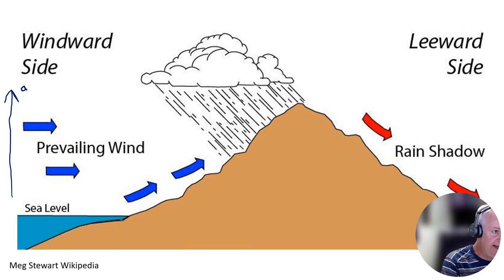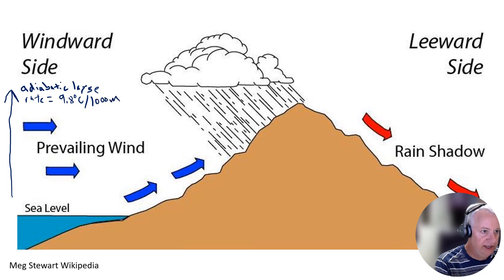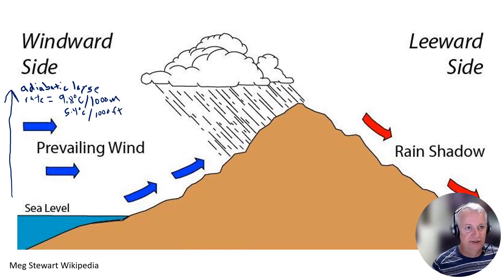This is defined by the adiabatic lapse rate — the rate that air cools as it rises. That rate is about 9.8 degrees C per 1,000 meters in elevation, or 5.4 degrees F per 1,000 feet in elevation change. So as air rises, it gets cooler.